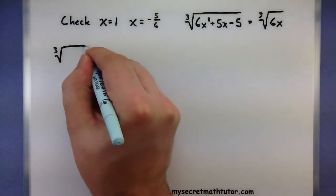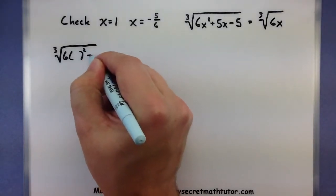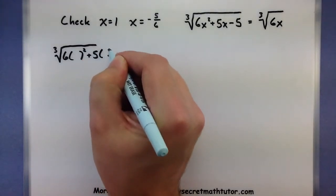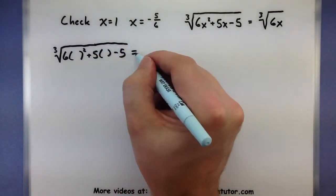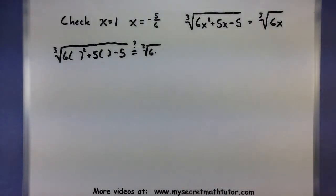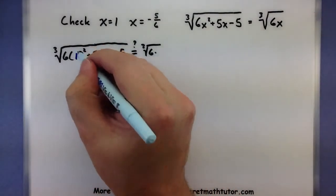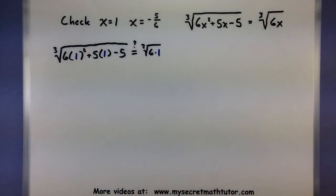So we'll take the cubed root of 6 times 1 squared plus 5 times 1 minus 5. We need to check is that equal to the cubed root of 6 times 1. All right, so let's put in a 1 for all of those spots.